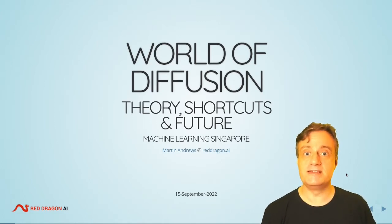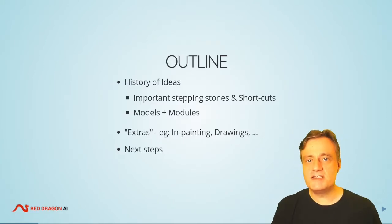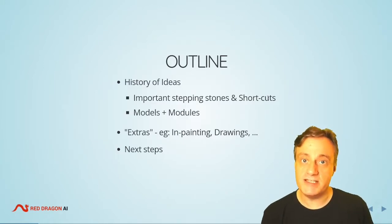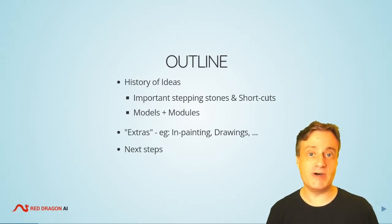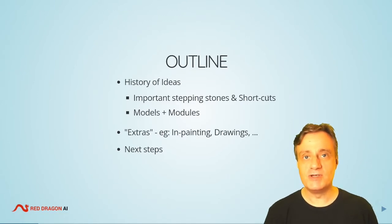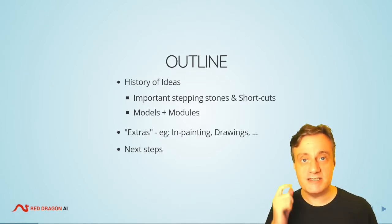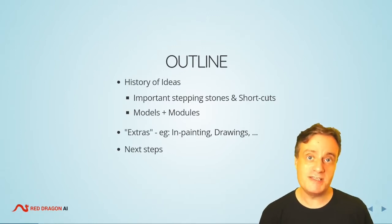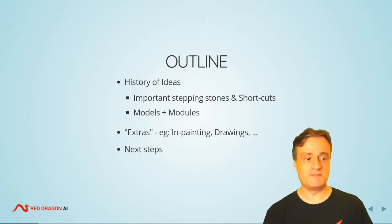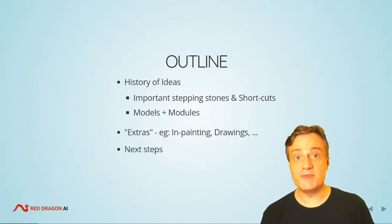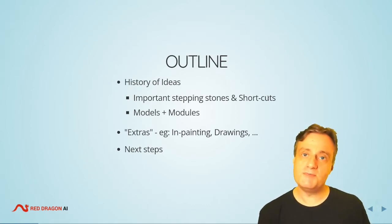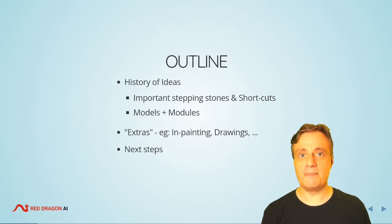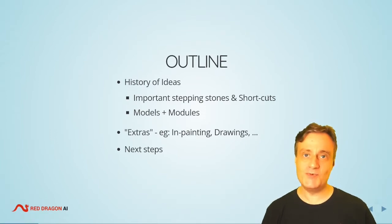The approach I'm going to take is basically to look at the history of the ideas that have arisen within diffusion models. While the diffusion idea is quite old, this whole sudden evolution of ideas has occurred since the beginning of COVID — so we're talking about relatively recent times, even in deep learning terms. I'll also talk about some of the extras, like inpainting or deriving nice pictures from drawings, and how this might be applied to other fields, including recently to movies.